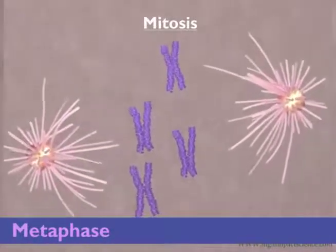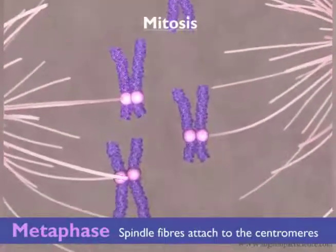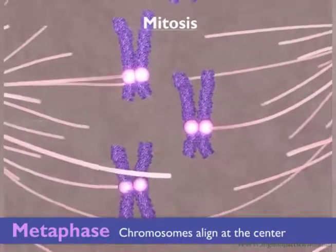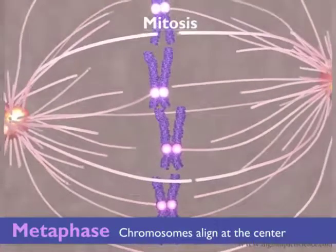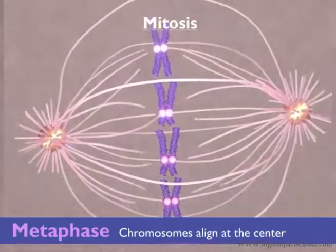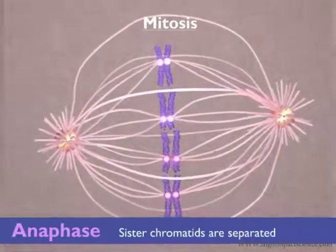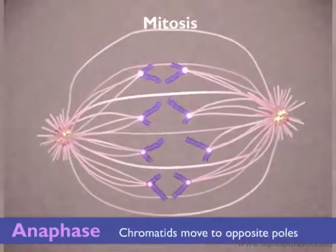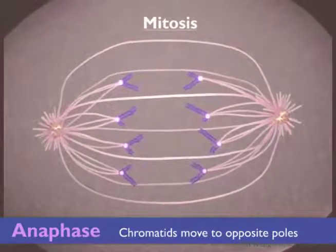During metaphase, the spindle fibers lengthen and attach to the centromere. The chromosomes align themselves at the center of the cell with the sister chromatids facing the opposite sides of the cell. During anaphase, sister chromatids separate at the centromere due to shortening of the spindle fibers. The chromatids move to the opposite poles of the cell and the spindle fibers begin to disappear.